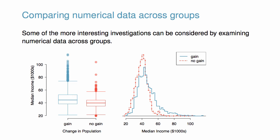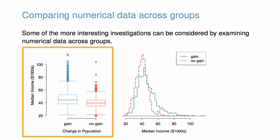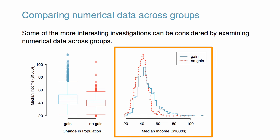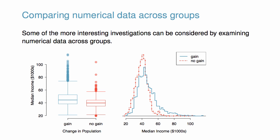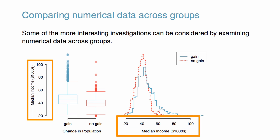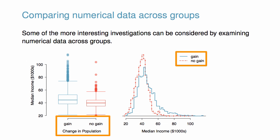Some of the more interesting investigations can be considered by examining numerical data across groups. Below we see side-by-side box plots and hollow histograms. These data investigate two variables in a dataset about US counties. The first variable, median income, is continuous, and the second variable, change in population, is categorical, measured as a gain or no gain. The figures show that median income was generally higher in counties that experienced population gain, shown in blue, compared to counties that did not experience population gain, shown in red.